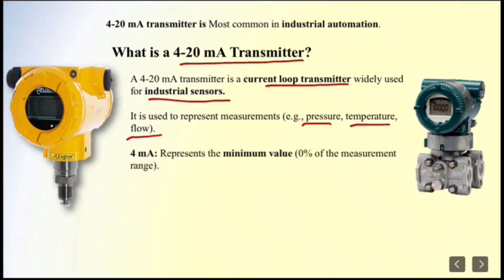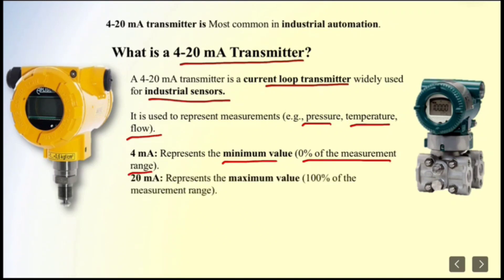In 4 to 20 mA, 4 mA means the minimum value or 0% of the measurement range. And 20 mA means the maximum value or 100% of the measurement range.